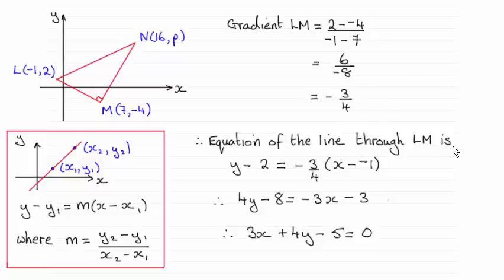Then when it comes to the equation of the line through LM using this form here, I've taken the point L as my X1, Y1 coordinates. You could get exactly the same answer if you chose M. So try it out.